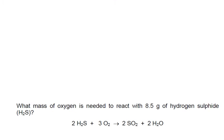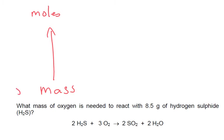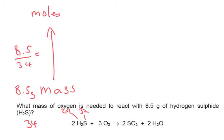What mass of oxygen is needed to react with 8.5 grams of hydrogen sulfide? Starting off with mass, and again we're going to go to moles. So our mass, we've got 8.5 grams. Now sulfur is 32 and hydrogen — well we've got 2 times by 1 — so the total molar mass of hydrogen sulfide is 34. So how many moles do we have? Well 8.5 divided by 34, we've found we've got 0.25 moles.